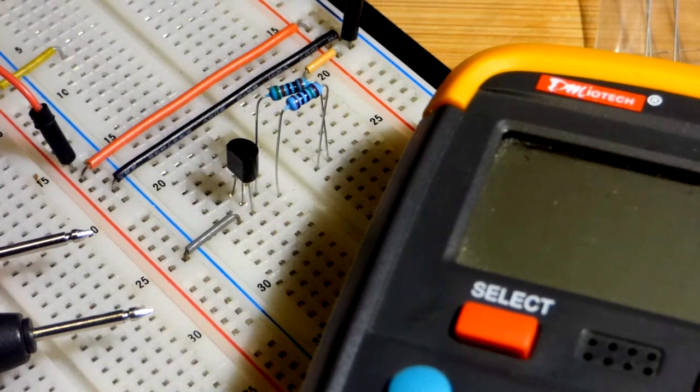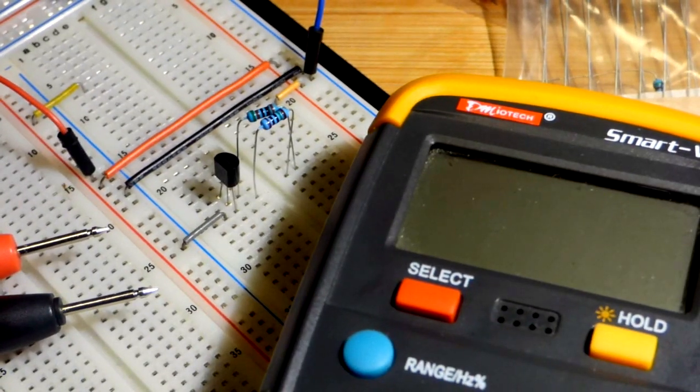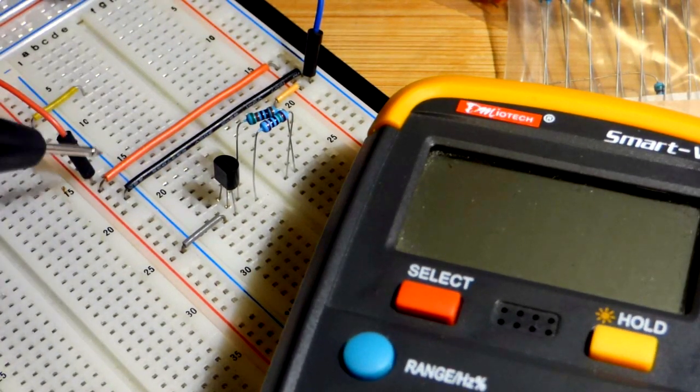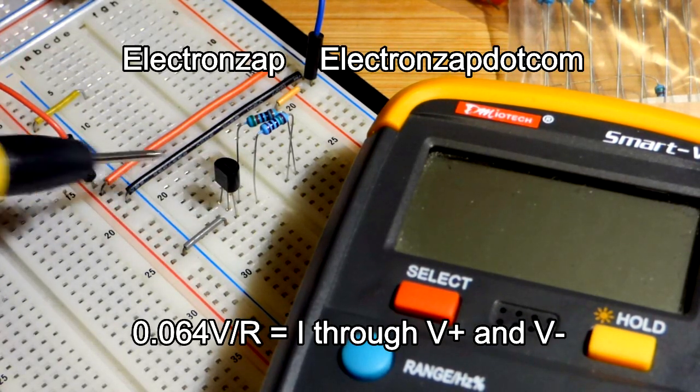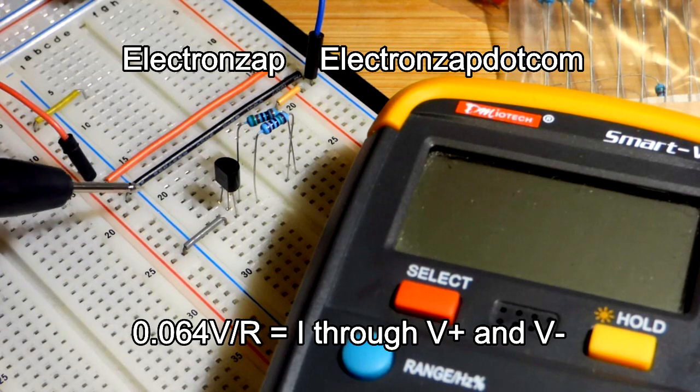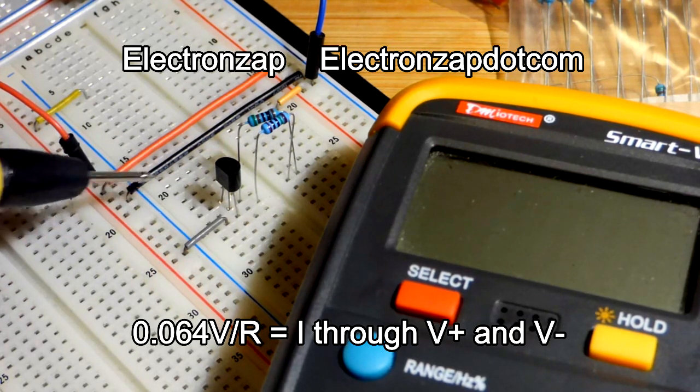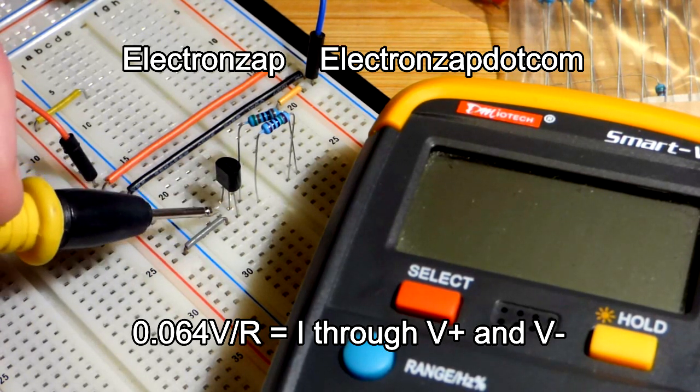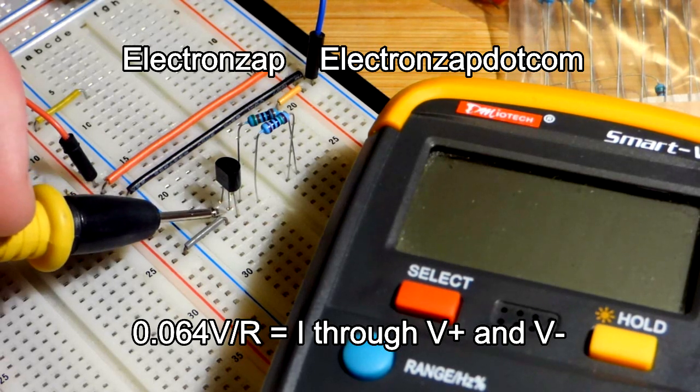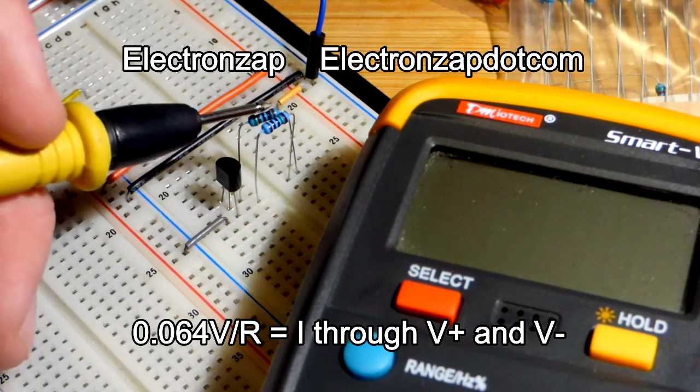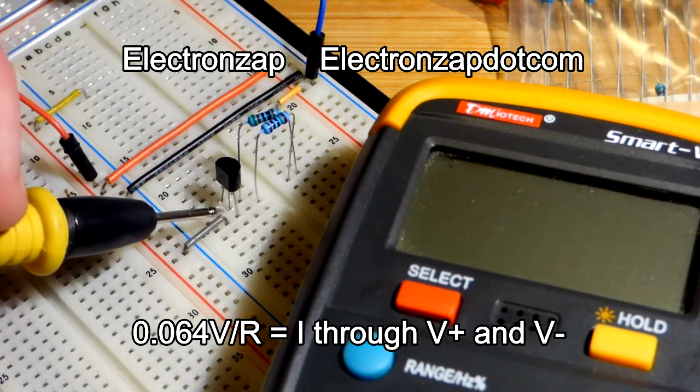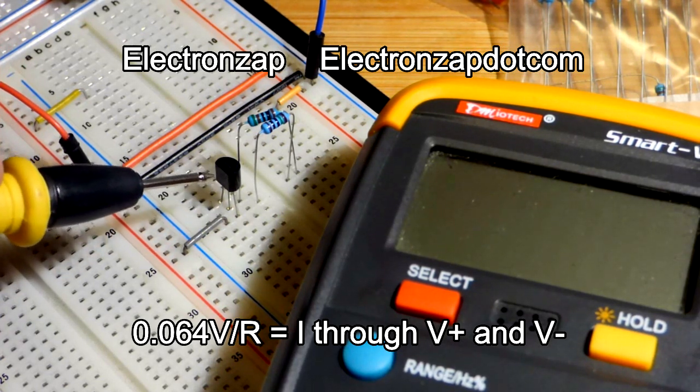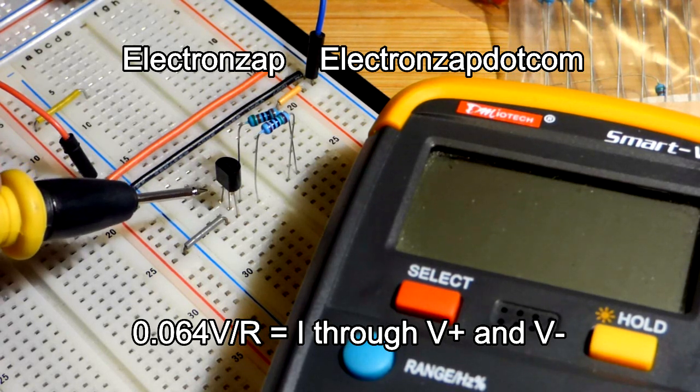And so what we have here, we'll zoom back a little bit, is we have the component, and the way to think of what current you're going to have flowing through the component, it's going to set it. As long as the load's not too big, it will hold the current steadily. You take the resistance across R and V minus, and you start with the voltage of 0.064 volts.